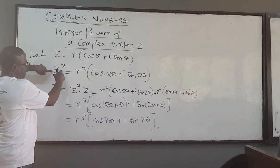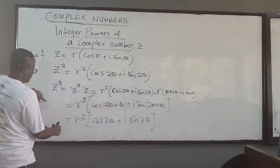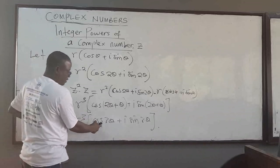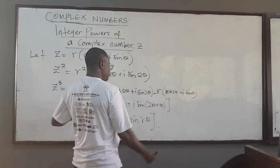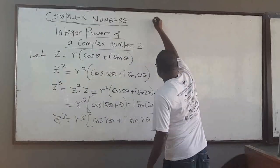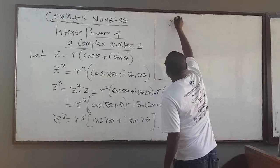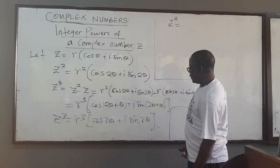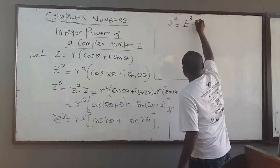So for z², I get r²(cos 2θ + i sin 2θ). For z³, I get r³(cos 3θ + i sin 3θ). Of course you can continue. For z⁴, you can do that as well — it is z³ multiplied by z.